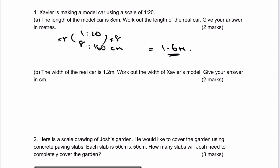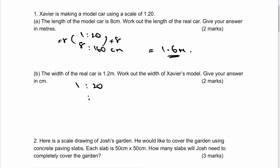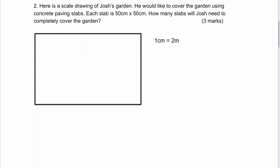Working the other way: the width of the real car is 1.2 metres. Using the same scale, 1.2 metres needs to be converted to centimetres. I've multiplied 20 by 6 to get to 120, and therefore I multiply this side by 6, giving me 6 centimetres in width. With these types of questions, you've got to be very careful with the units — it is a favourite to change the units.